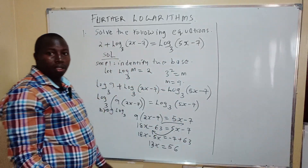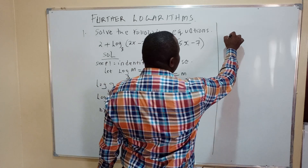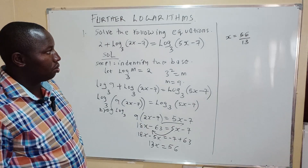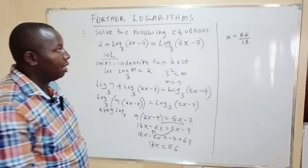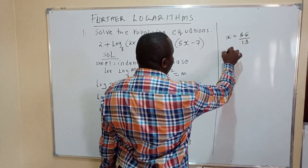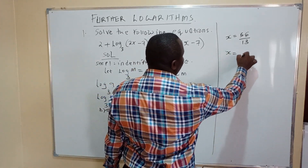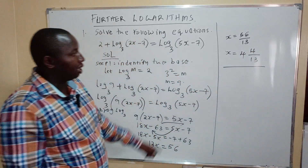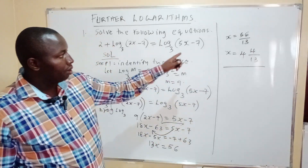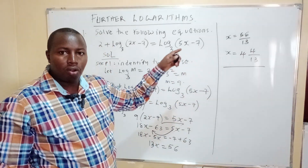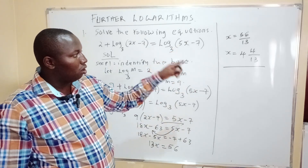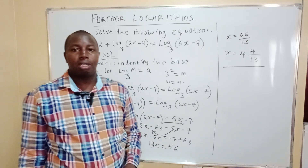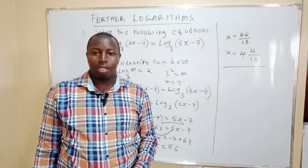So the value of x is 56 divided by 13. This simplifies to 4 and 4 over 13 as a mixed fraction. That is the answer, and that is how you solve this type of logarithm equation.